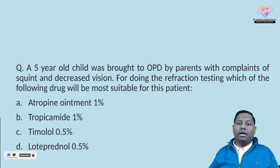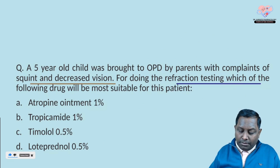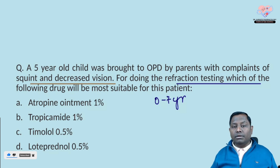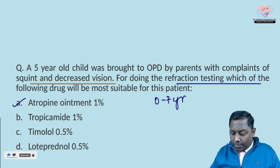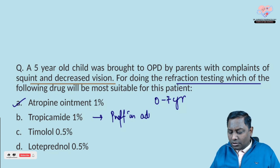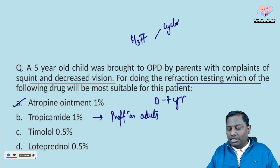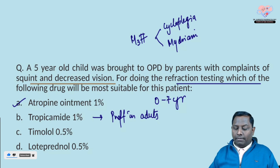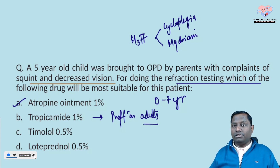The next question: a five-year-old child is brought to the OPD with squint and decreased vision. For refraction testing, which drug is most suitable? In the pediatric population, from age zero to seven years, we use a stronger, more potent cycloplegic agent — atropine ointment 1%. Tropicamide is preferred in adults because its duration of action is shorter compared to atropine, which lasts seven to ten days. Both are M3 antagonists causing cycloplegia by acting on the ciliary muscle, and also cause mydriasis.